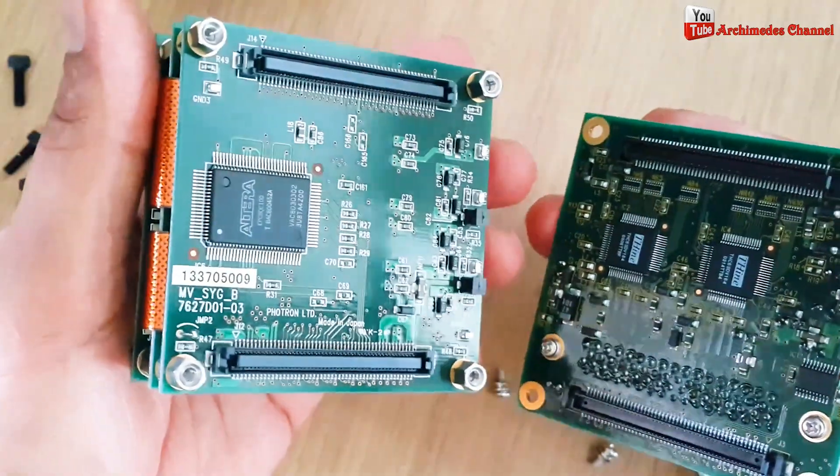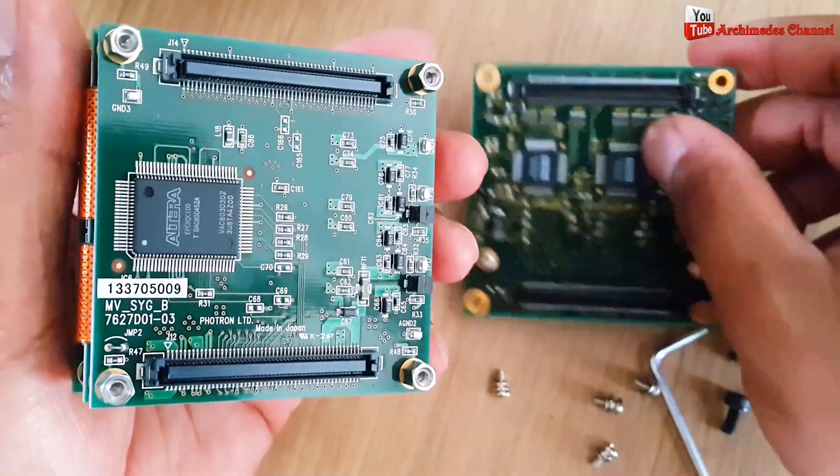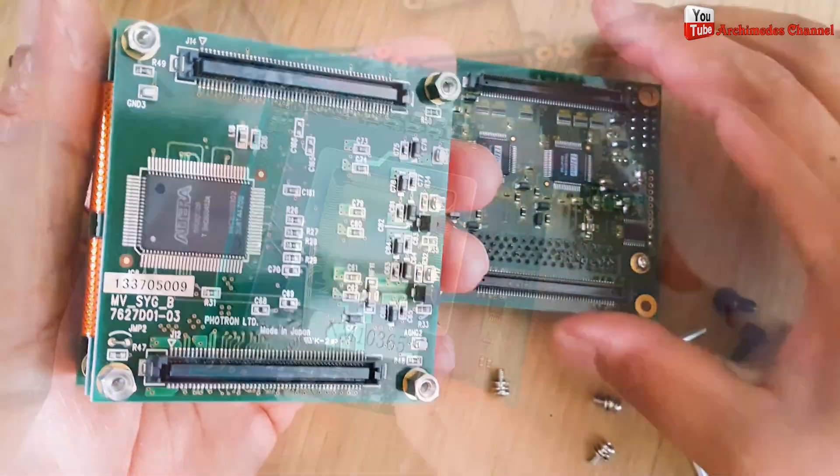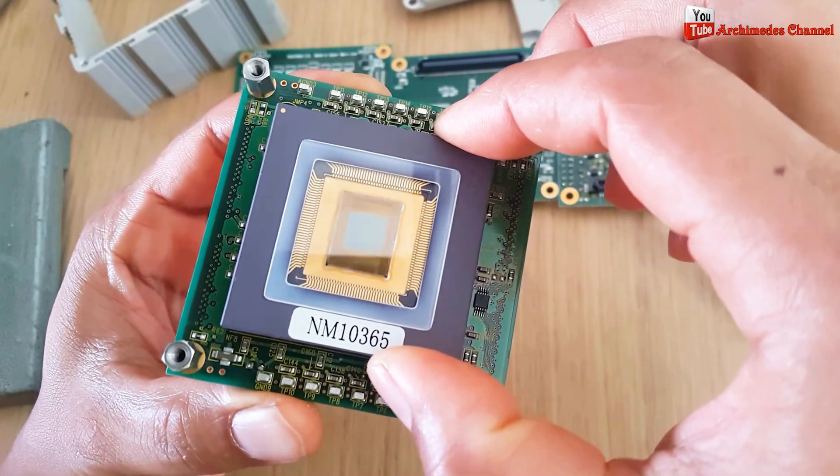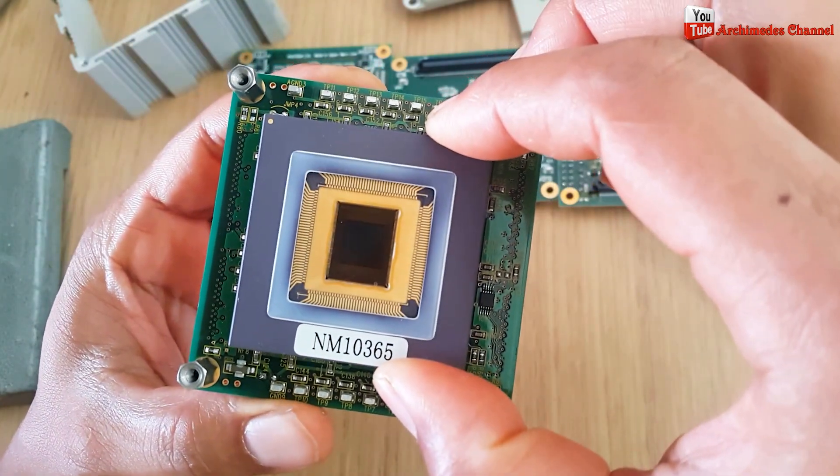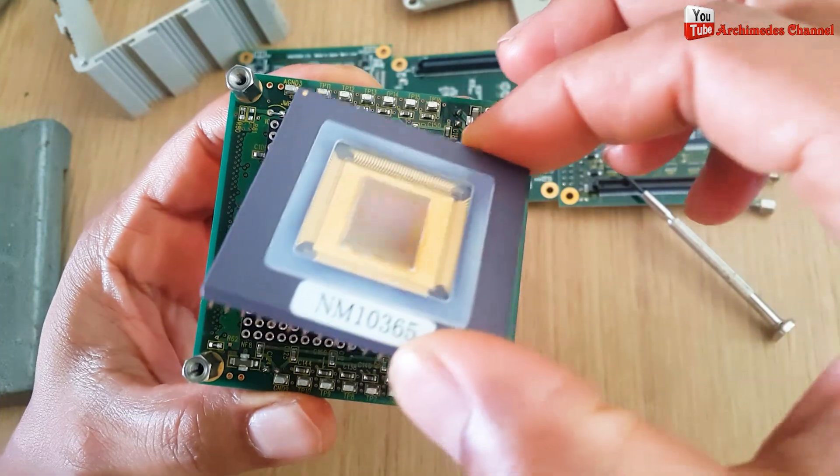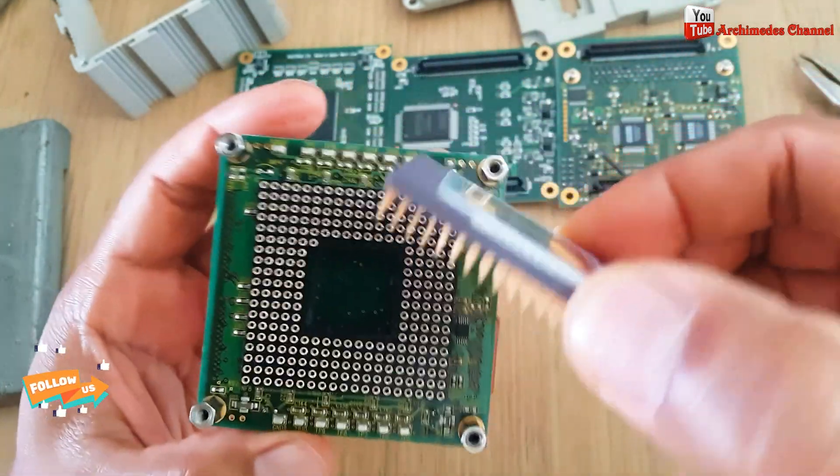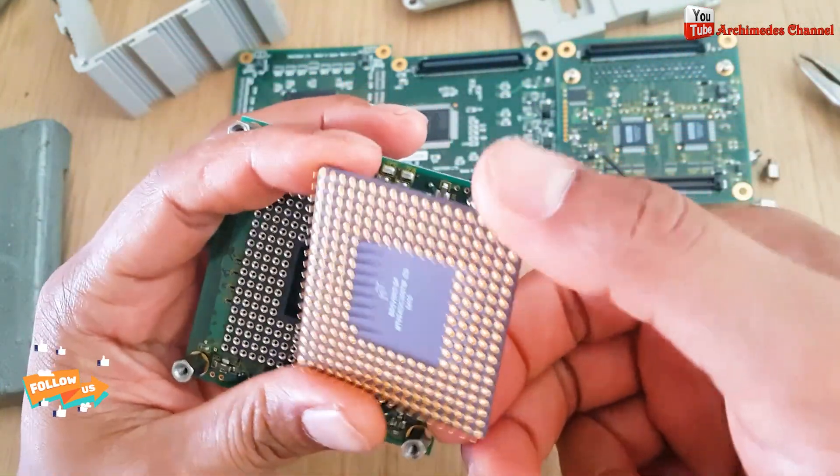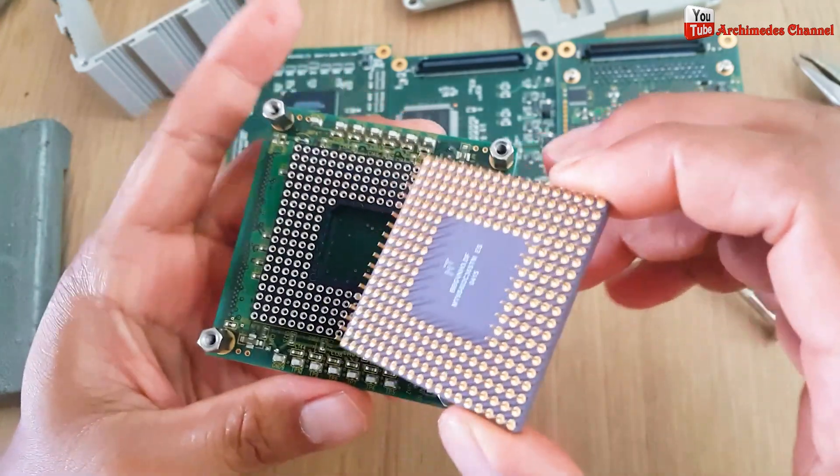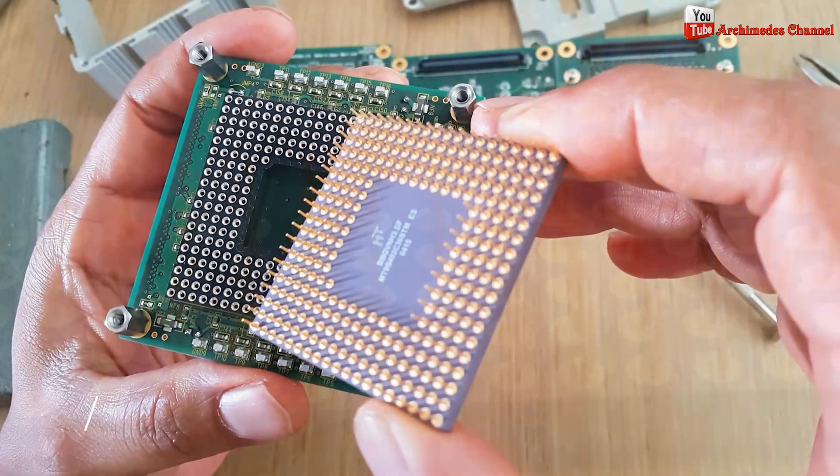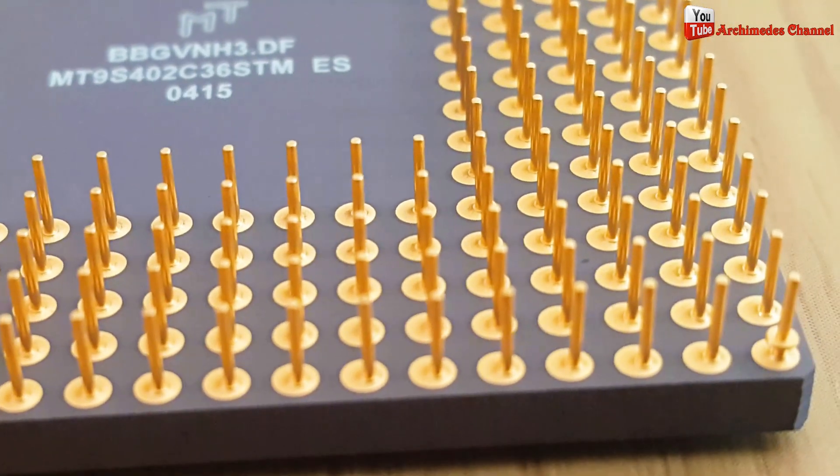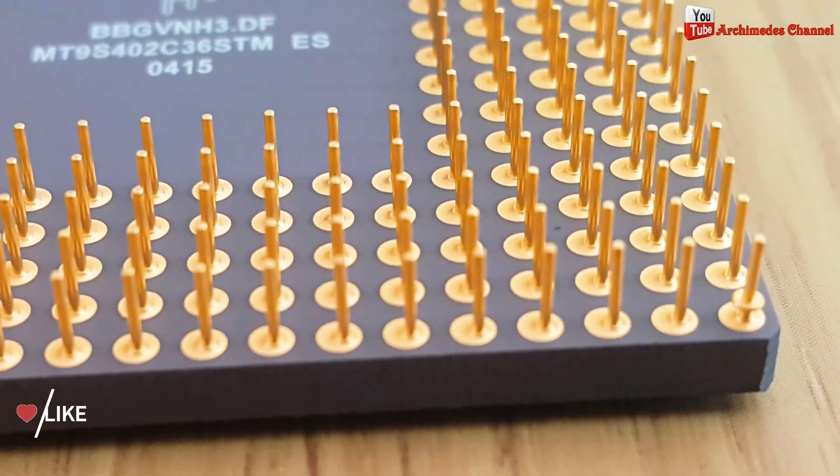Recovering gold from old electronic components involves a process called e-waste recycling. This involves disassembling electronic devices and extracting valuable materials such as gold, copper and other metals for reuse. The process of e-waste recycling typically begins with the collection and transportation of electronic waste to a recycling facility.